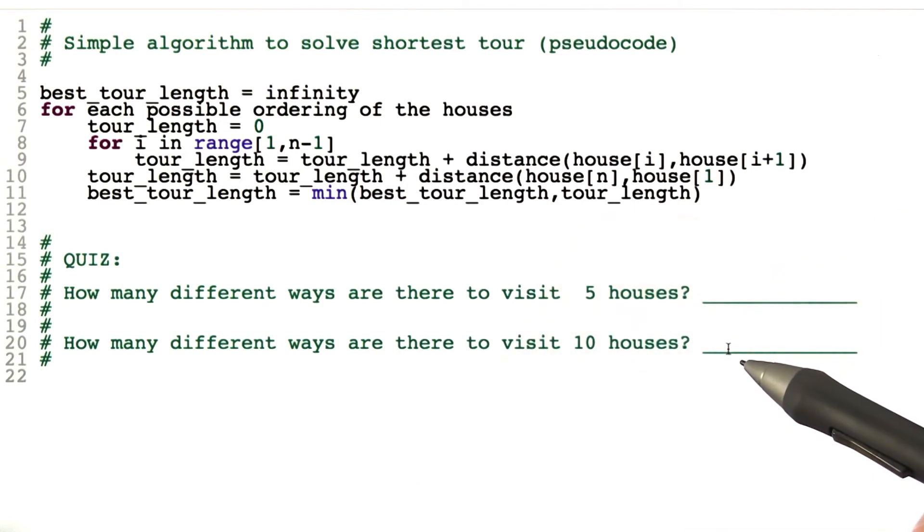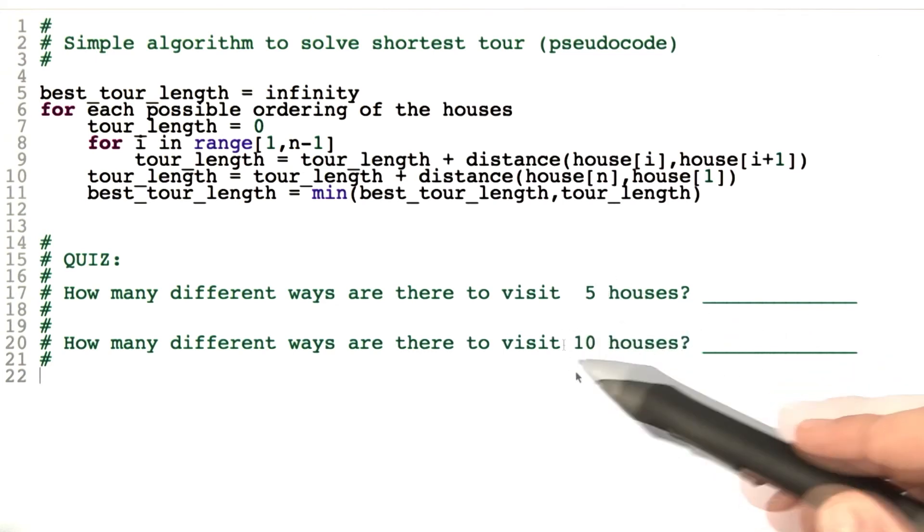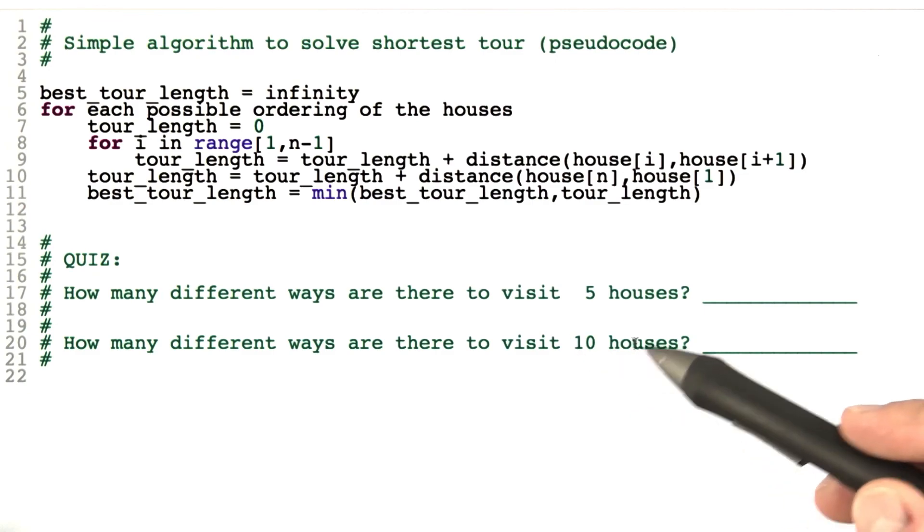And then how many different ways are there to visit 10 houses. You're going to need a program or calculator for figuring out at least the second one, the first one you can probably do in your head. But for this one, you already need a computer to calculate the number.